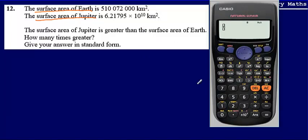And we're going to be dividing the surface area of Jupiter, which is 6.21795 times 10 to the power of 10, and we're going to take that surface area and divide that by the surface area of Earth, so 510,072,000.